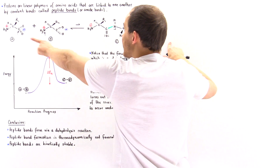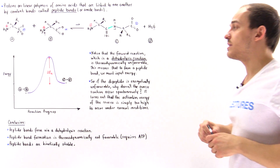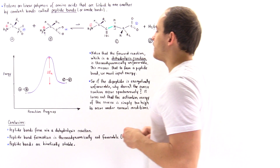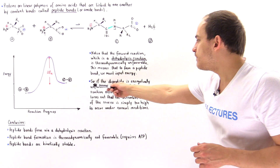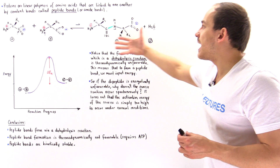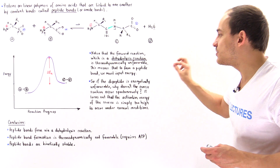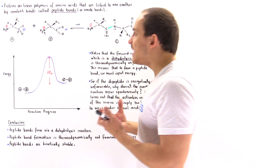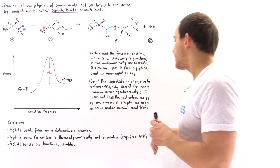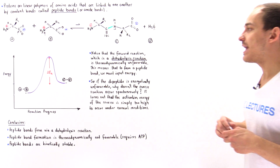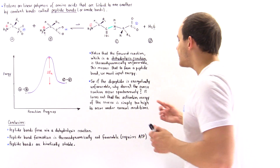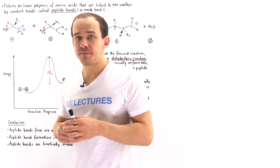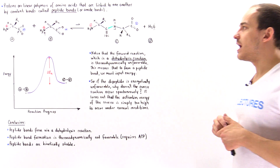At a pH of 7 and normal body temperature, we don't have enough energy for this reverse reaction to actually take place. To actually break the peptide bond inside our body, we have to use special enzymes that decrease this activation barrier. So even though dipeptide formation is energetically unfavorable, the reverse reaction doesn't take place spontaneously because the activation energy is simply too great, and at normal body temperature and neutral physiological pH, this reaction simply does not take place.